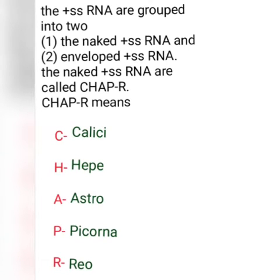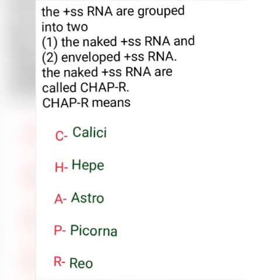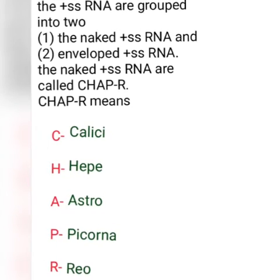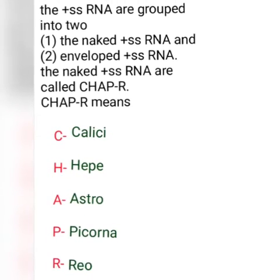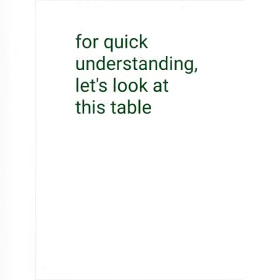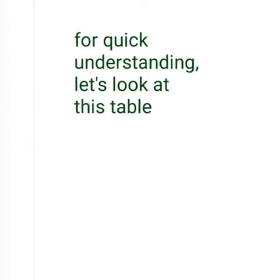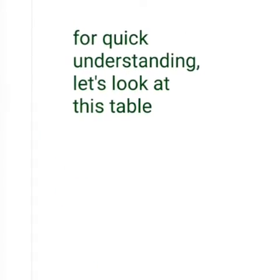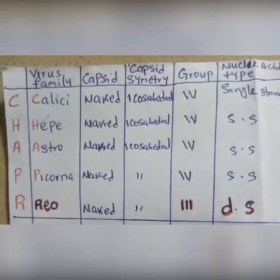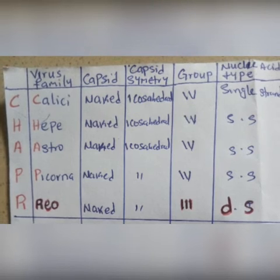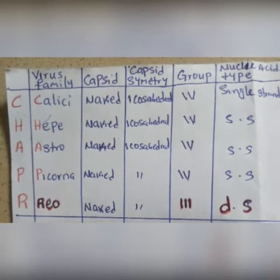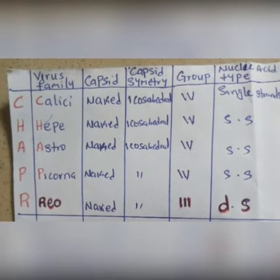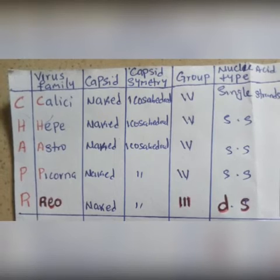The naked positive sense RNA are called Charp-ar. Charp-ar stands for: Calici, Hepatitis (Hepis), Astro, Picorna, and Reo. For quick understanding, let's look at this table. They are all naked. They are icosahedral. They belong to group 4. They are single strand.